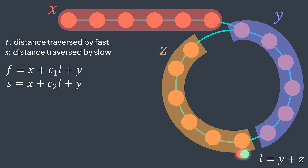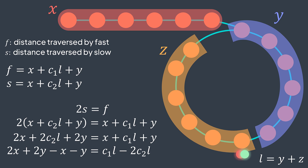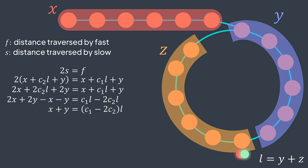We know that fast moves twice as fast as slow, so f = 2s. Substituting their expressions: x + c1·l + y = 2(x + c2·l + y). Distributing and simplifying, we get x + y = (c1 − 2c2)·l. Moving y to the other side: x = (c1 − 2c2)·l − y. This means the distance before the cycle equals a certain number of loop lengths minus the distance before the meeting point.